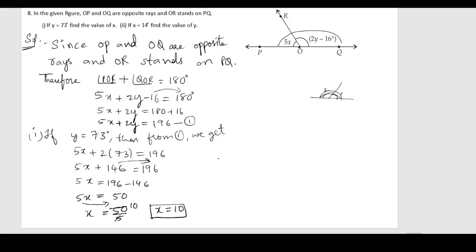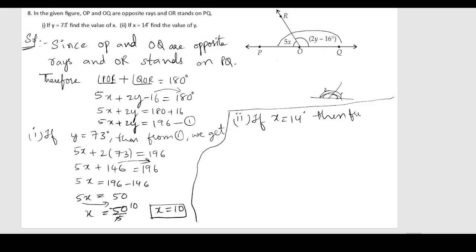Now for the second condition: x equals 14 degrees. Substituting into the first equation: 5 times 14 plus 2y equals 196.